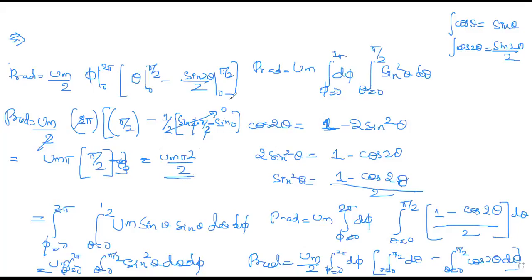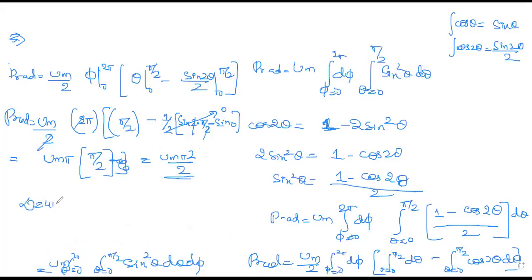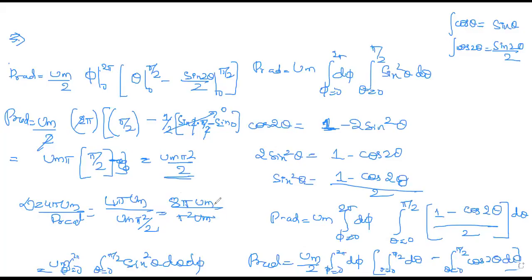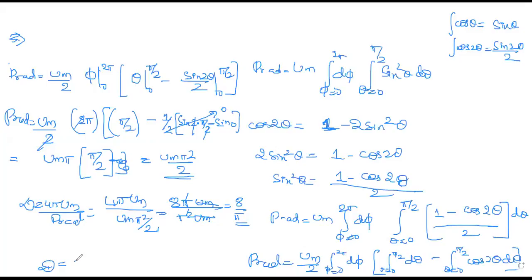This is the power radiated for the unidirectional sine pattern. Now apply to the directivity formula: D = 4πUm / (Um·π²/2) = 4πUm·2 / (Um·π²) = 8π/(π²) = 8/π. In decimal, 8/π ≈ 2.546, or approximately 2.55.